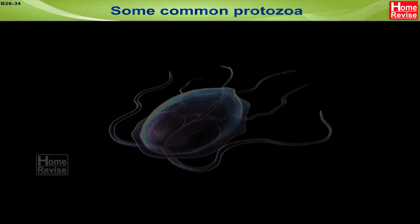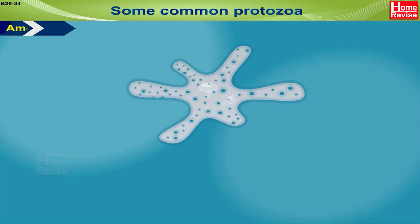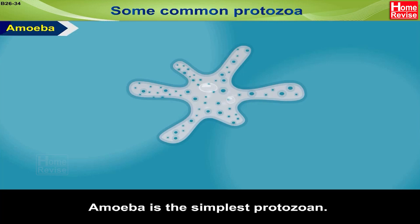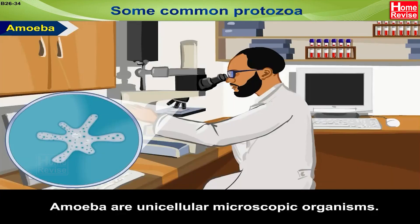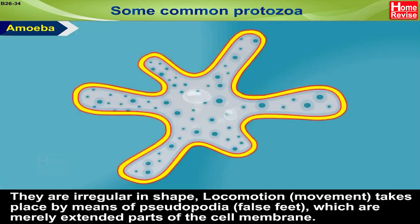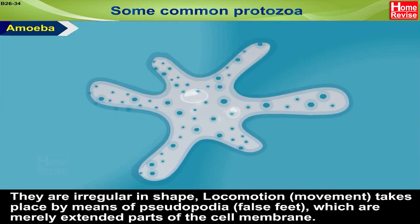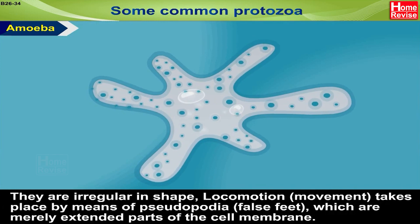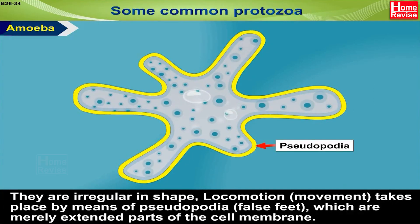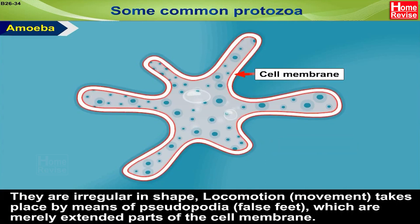Amoeba is the simplest protozoan. Amoeba are unicellular microscopic organisms. They are irregular in shape. Locomotion, i.e. movement, takes place by means of pseudopodia, i.e. false feet, which are merely extended parts of the cell membrane.